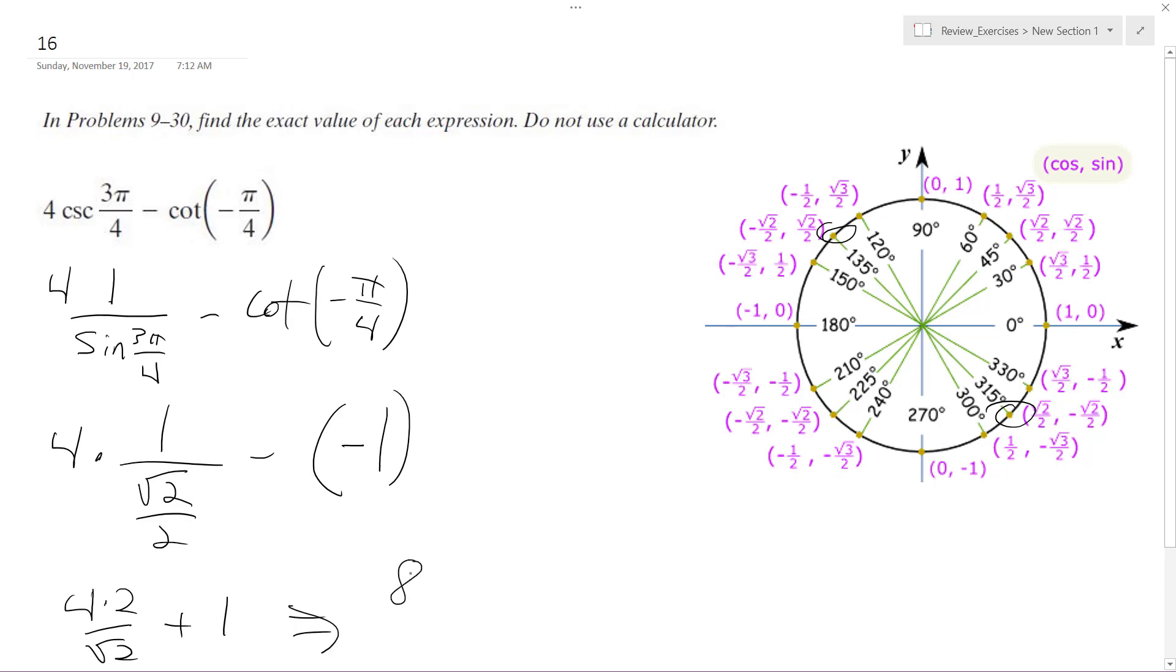We end up with 8, I'm rationalizing the denominator here, plus 1, or we could have 8 root 2 plus 2 all over 2.